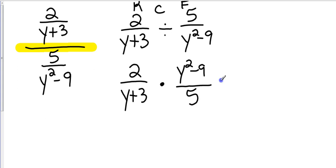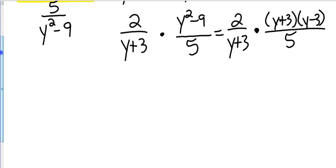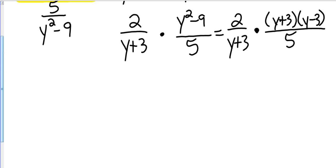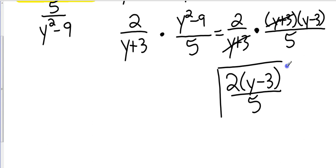Now let's go ahead and factor that y squared minus 9. We're going to keep the 2 over y plus 3, keep the multiplication sign. y squared minus 9 is a difference of two perfect squares, so that's going to be y plus 3 times y minus 3, and then we still have our 5 on the bottom. Now it's multiplication, so anything top and bottom that can cancel, we cancel it out. I end up simply with 2 times y minus 3, all over 5. So it's just a different look of something we've already seen before.